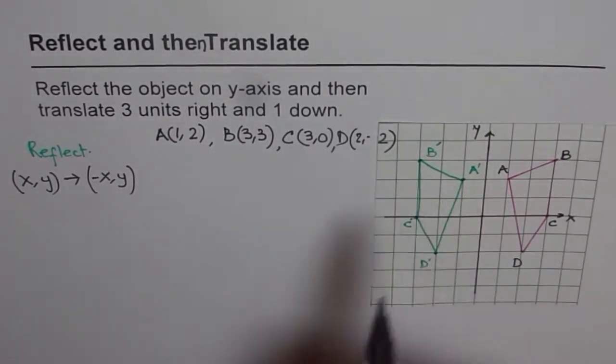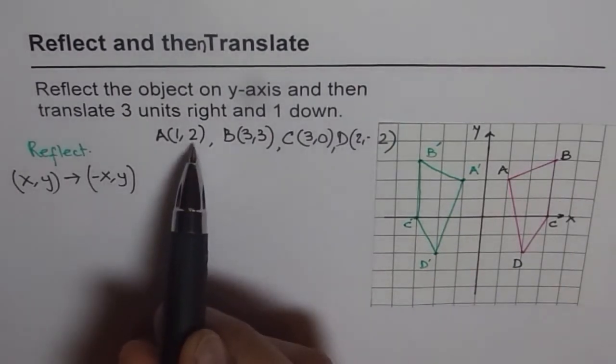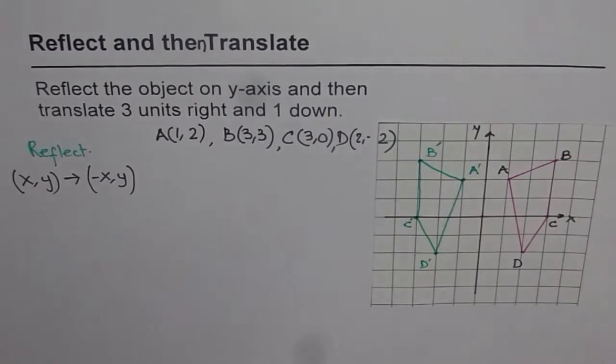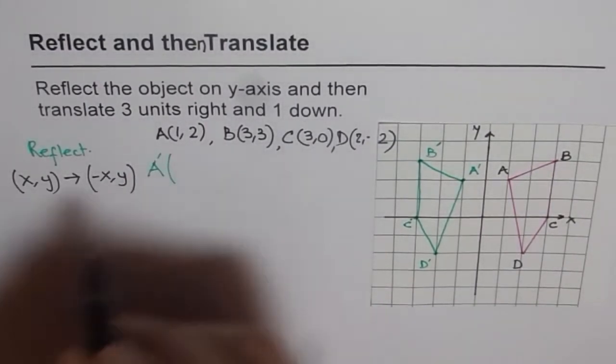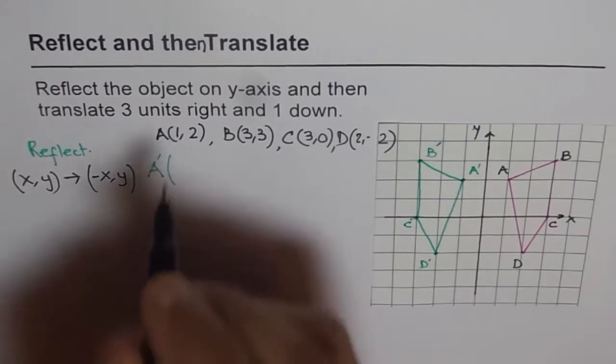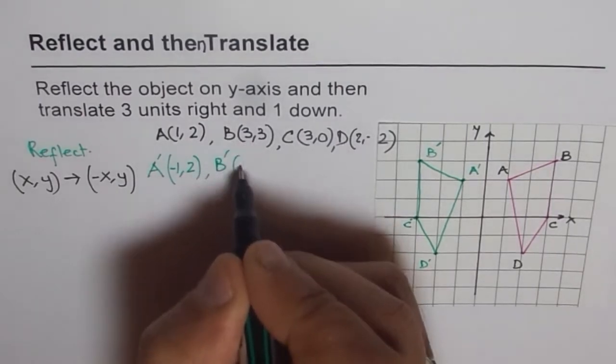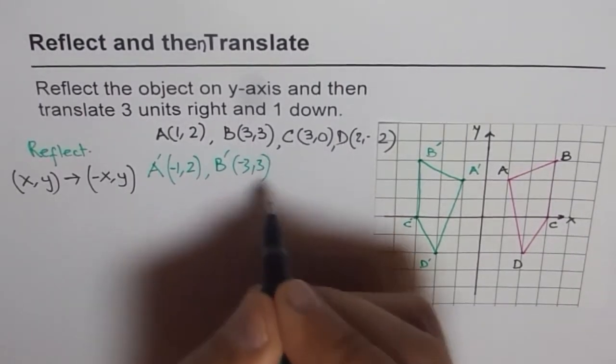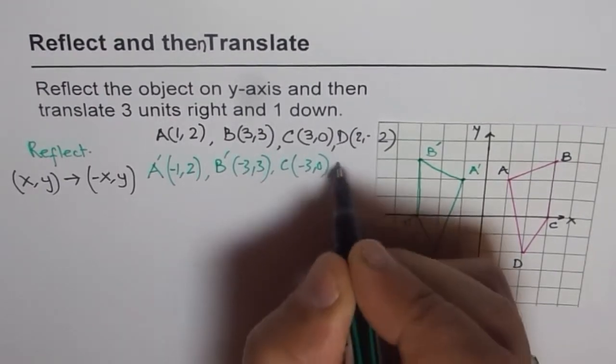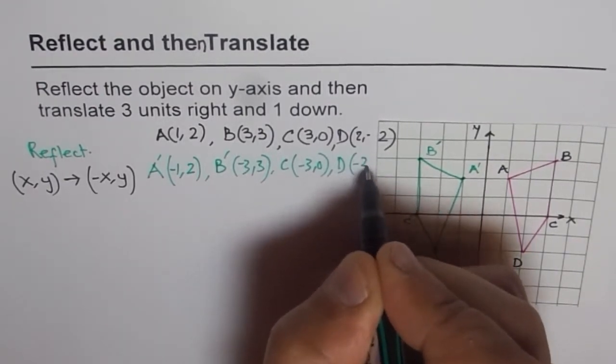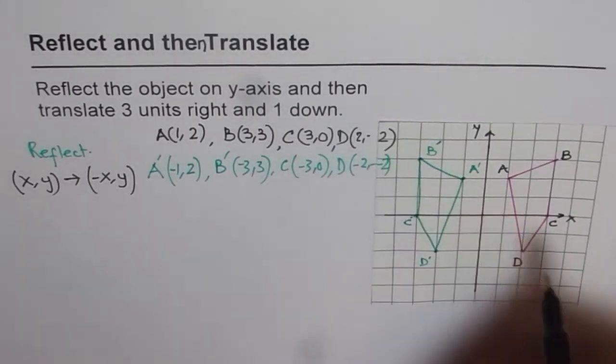So when we reflected, what really happened was, x values changed to minus x, but y remains same, right? So let me write down the reflected point here and then we will check. So A dash will be (-1, 2), y value remains same. For B, (-3, 3). For C, (-3, 0). And for D, (-2, -2), both minus.